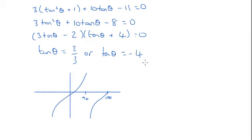So the answer is this one, not this one. Tanθ = 2/3 would be here or here, which would be positive. And there isn't an answer between 90° and 180° for 2/3, so it's not this one. This is not correct. It's only tanθ = -4.